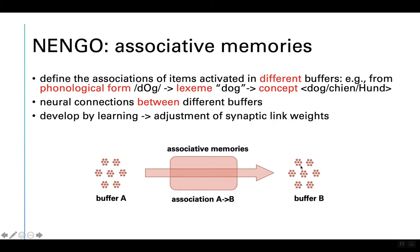In the next buffer we can define the lexeme 'dog,' and in the next buffer we can define the meaning of the word, which is more or less language-independent. The associative memories define the neural connections between different neuron buffers — between simple buffers representing neural states. The link weights within the associative memories and the connections between buffers are adjusted during learning.